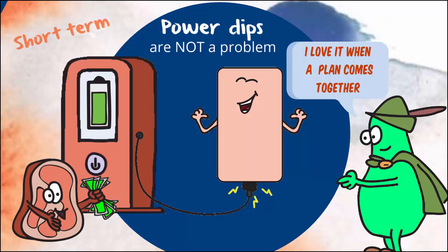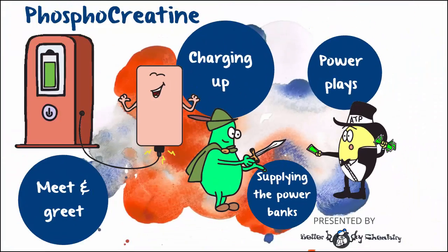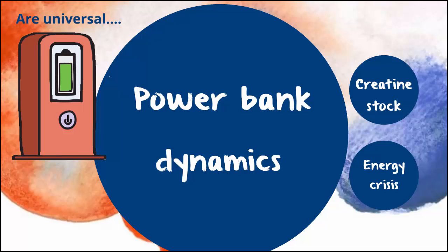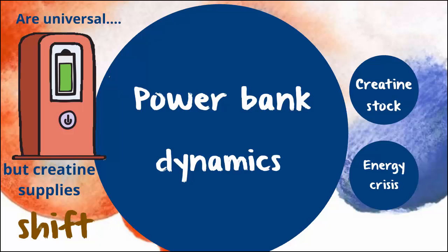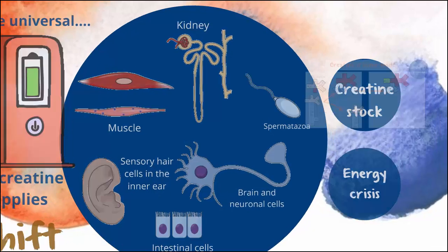This system can't power the cell for very long, but it doesn't have to. Restoring oxygen supplies is a priority, so a multitude of systems kick in to ensure adequate oxygen delivery. Not every cell will have creatine power banks, and the amount of creatine inside a cell is variable. The phosphogen system is particularly important for cells with high energy requirements, and the exact amount inside a cell depends on creatine supplies.